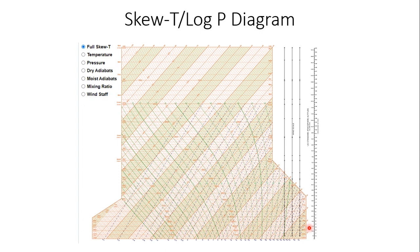Generally, this is what a full Skew-T Log-P diagram looks like. If you've never seen one, you'd think it looks like a foreign language. There are a lot of lines on this diagram. The horizontal solid brown lines indicate pressure at various levels — for example, 200 millibars, 250 millibars, 300 millibars, and so on. Dashed lines represent mixing ratio values. You've got moist and dry adiabats. You have solid diagonal brown lines representing temperature. And on the right side of the scale, that's where we see wind direction and speeds plotted as the weather balloon ascends through the atmosphere.